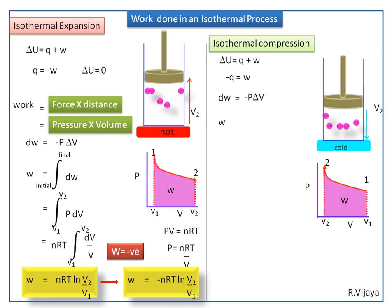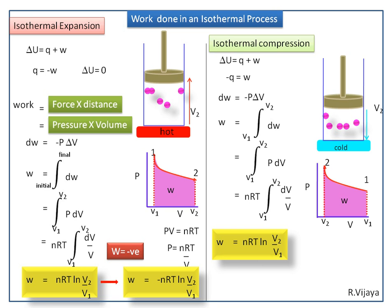dW is equal to minus V·dP. Integrating this equation, we get NRT ln(V2/V1). Here, ΔV is a negative value — final volume minus initial volume, where the final (lower) volume minus the higher initial volume is negative. So negative into negative equals positive. Therefore, W is positive in isothermal compression: W is equal to NRT ln(V2/V1).